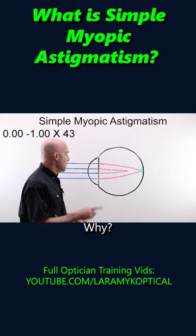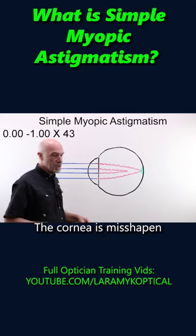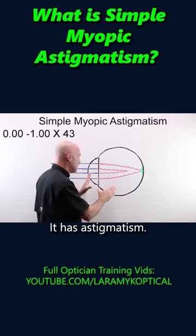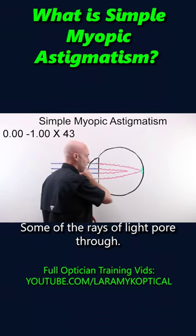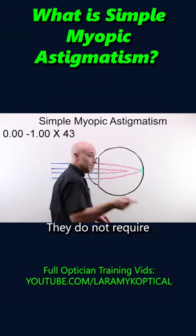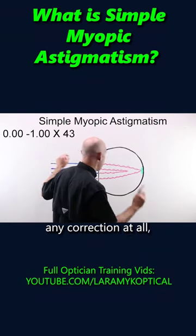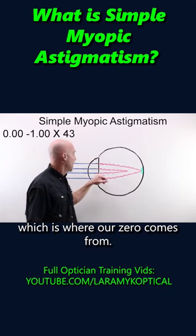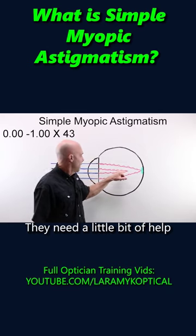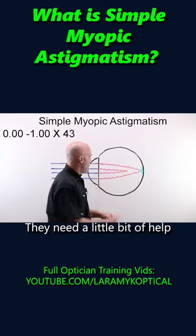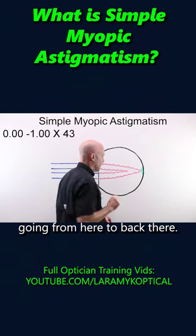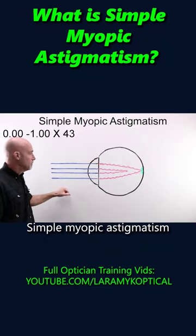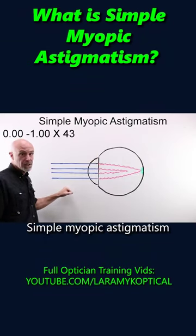Why? The cornea is misshapen in that football shape — it has astigmatism. Some of the rays of light pour through and do not require any correction at all, which is where our zero comes from. The other meridian needs a little bit of help going from here to back there. Simple myopic astigmatism.